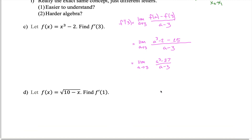Can we evaluate this limit? If we try changing all the a's into 3's we get 0 over 0 — a removable discontinuity — so we need to algebraically cancel out the a minus 3 in the denominator with one hidden in the numerator. If you're familiar with the difference of cubes formula, you could apply it here. Otherwise, you can use polynomial long division: divide a cubed minus 27 by a minus 3.